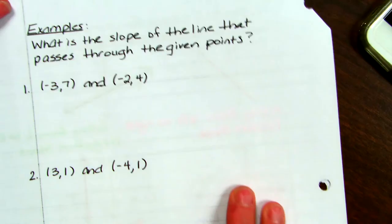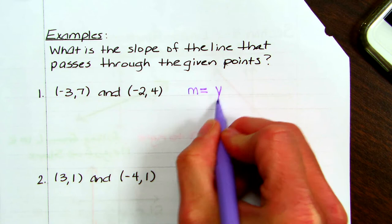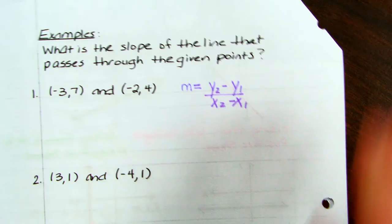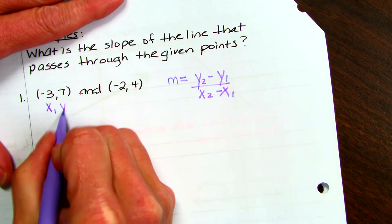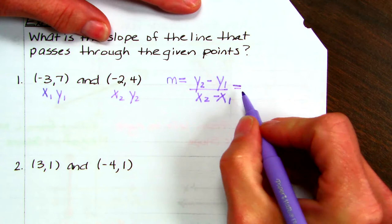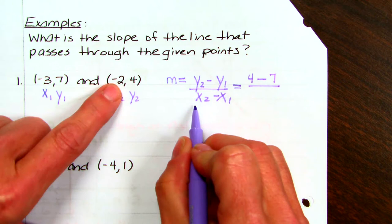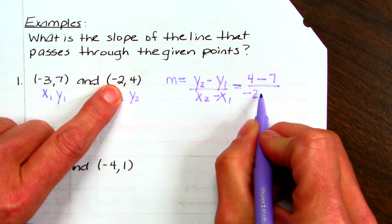Now we're going to find the slope between two points. Write down the slope formula: m equals y2 minus y1 divided by x2 minus x1. Label your points x1, y1 and x2, y2, then substitute into the formula according to how you have labeled. So y2 is 4, minus y1 which is 7, divided by x2 which is negative 2.